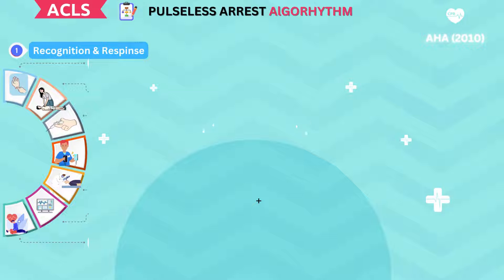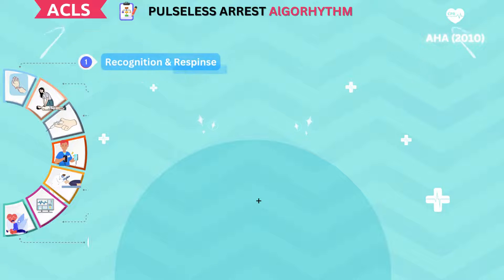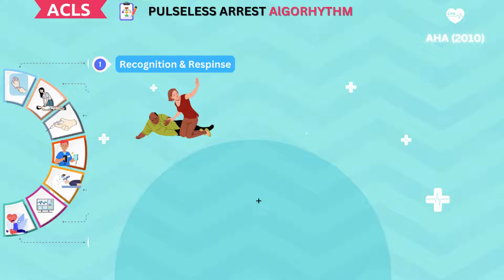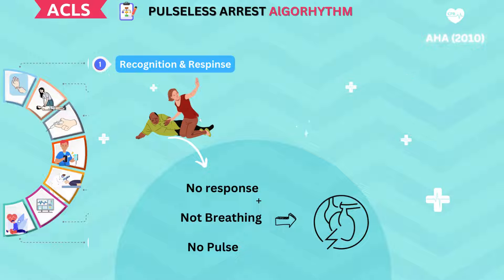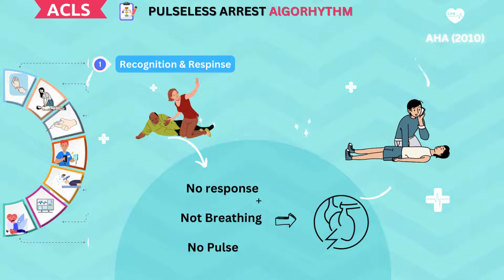Let's start with Step 1: Recognition and Response. The first step in the pulseless arrest algorithm is the recognition and response to a cardiac arrest. In this step, we need to identify the signs of cardiac arrest, such as unresponsiveness, absence of breathing, and absence of a pulse. Once the cardiac arrest has been identified, it is crucial to initiate the emergency response system and call for help immediately.